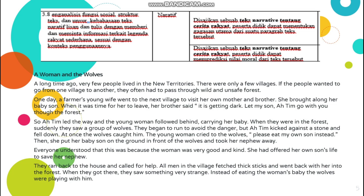Contohnya ini adalah A Woman and the Wolves — sebuah cerita dongeng. Kalau nanti di soal adalah legenda rakyat sederhana, mungkin Roro Jonggrang, Bandung Bondowoso, atau yang lain. A Long Time Ago, Very Few People Live In The New Territories, There Were Only A Few Villages. If the people wanted to go from one village to another, they often had to pass through wild and unsafe forests. Naratif merupakan sebuah cerita fiksi atau cerita khayalan yang menggambarkan kejadian masa lalu.